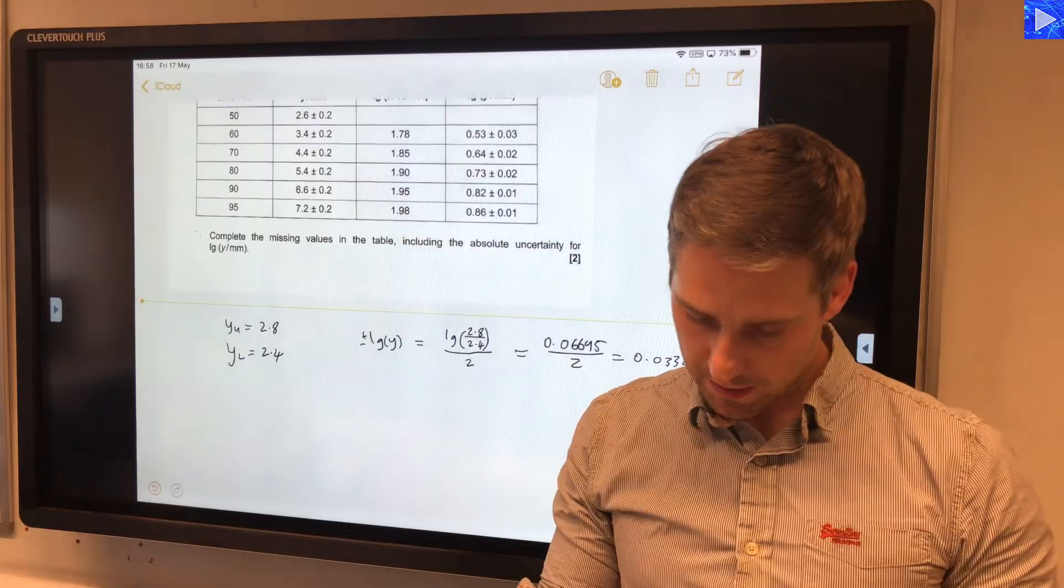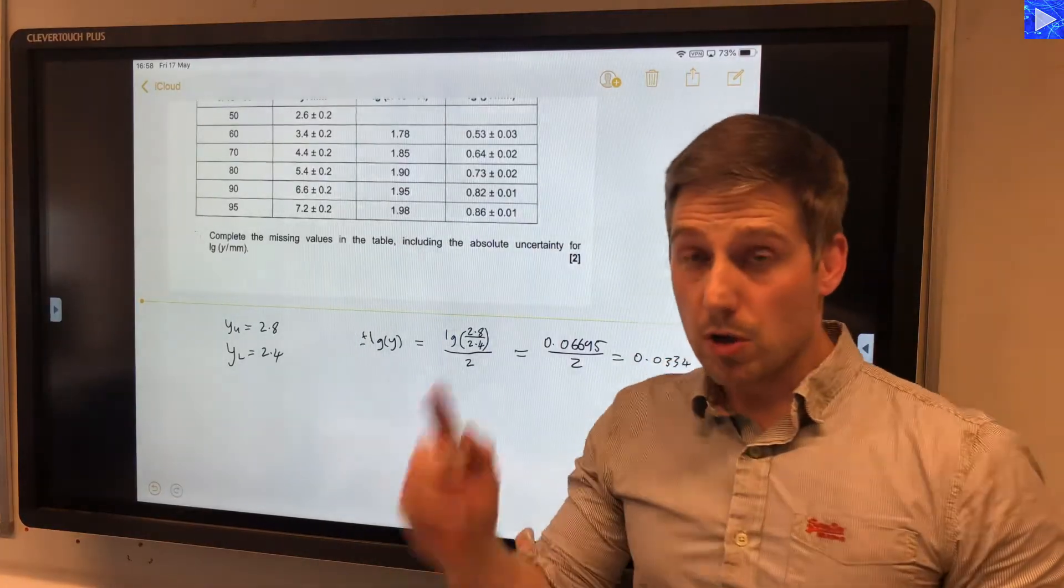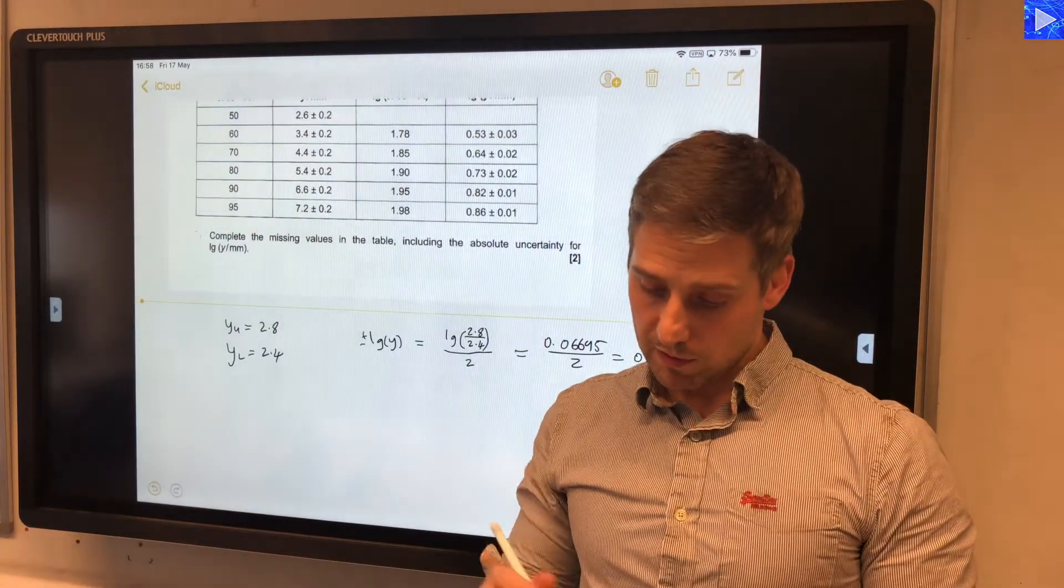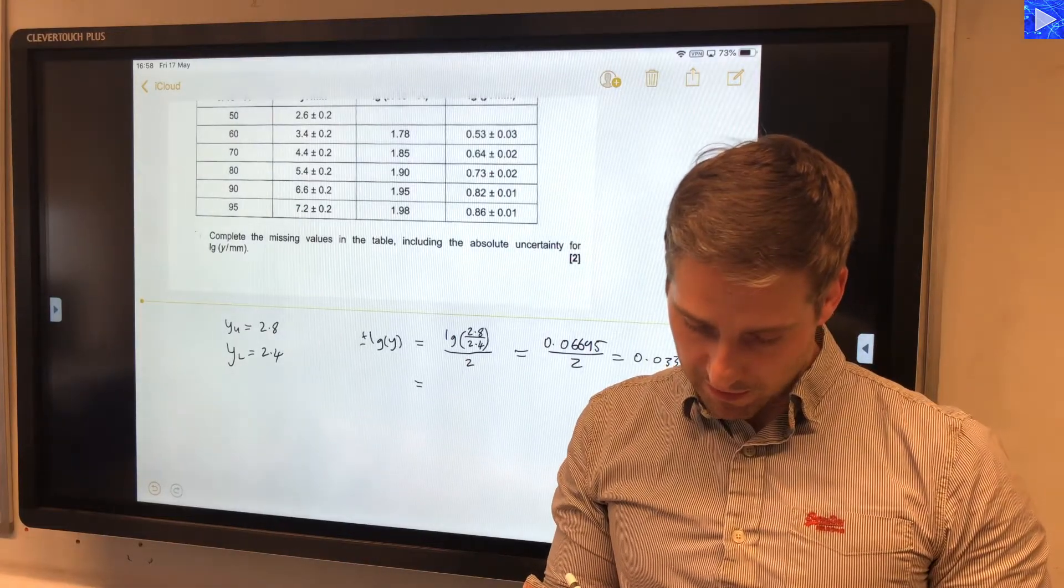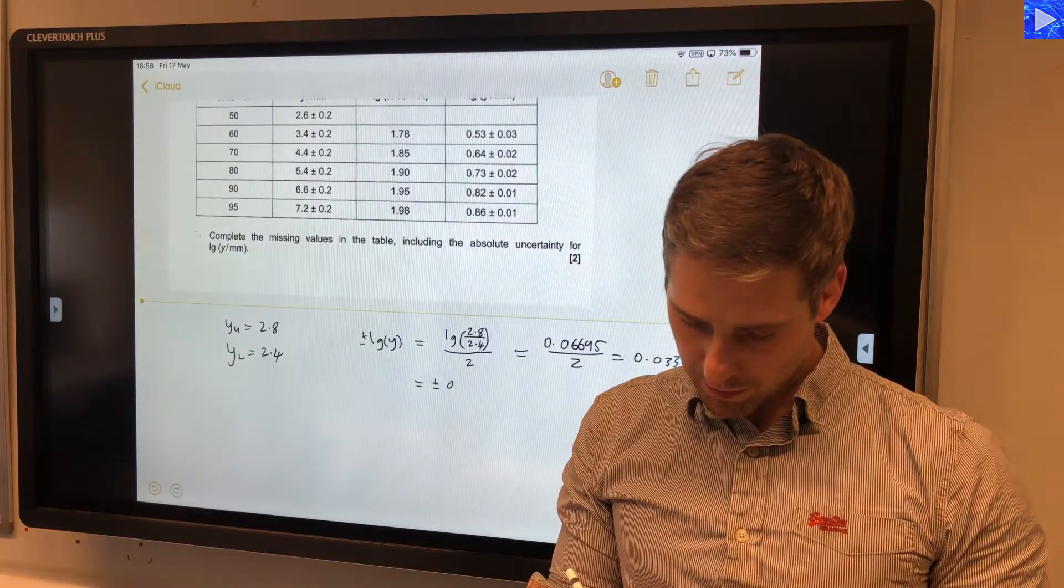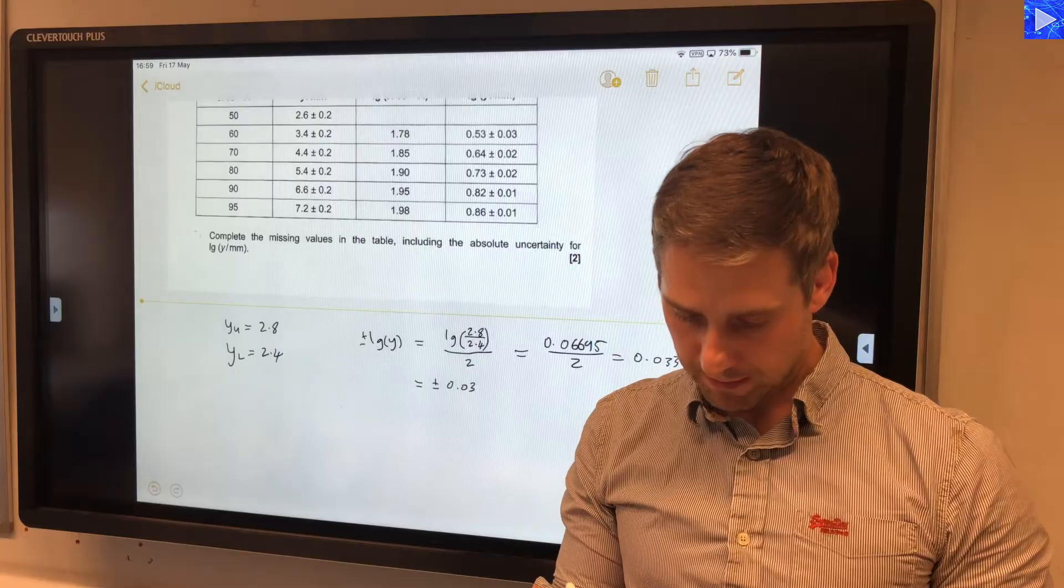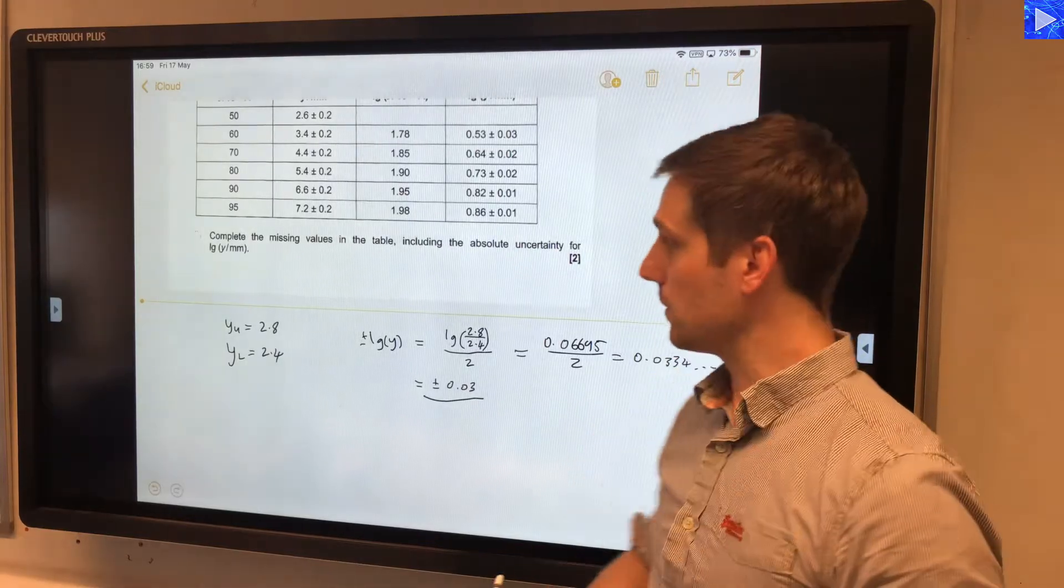We don't need all the other points. Because absolute uncertainties are written to the first significant figure, we can say that this is plus or minus 0.03. That's our absolute uncertainty.